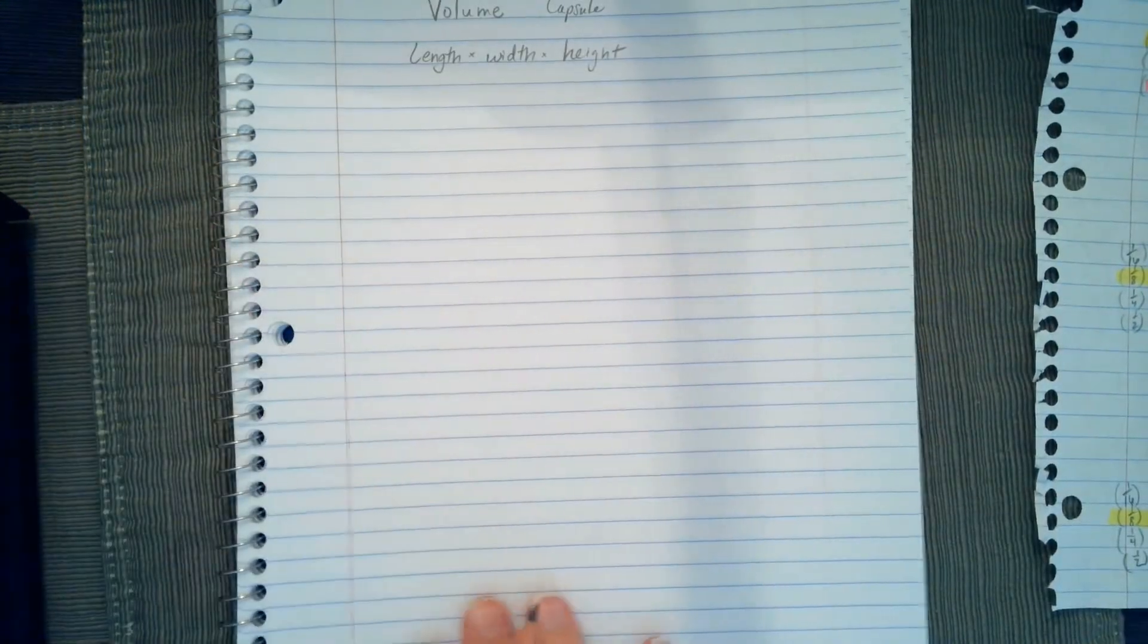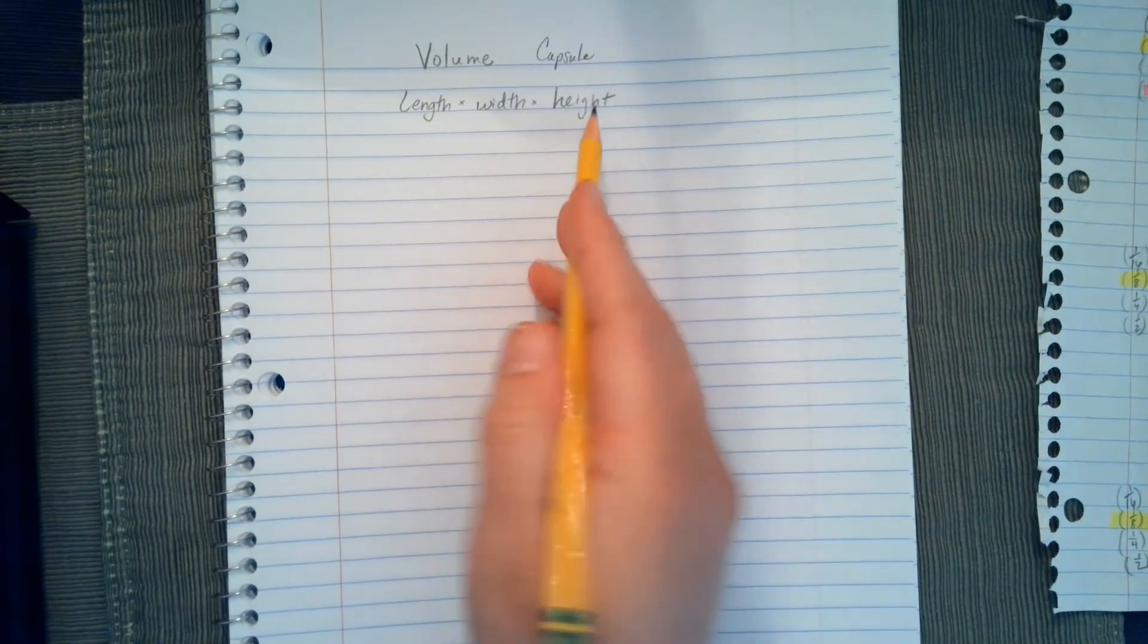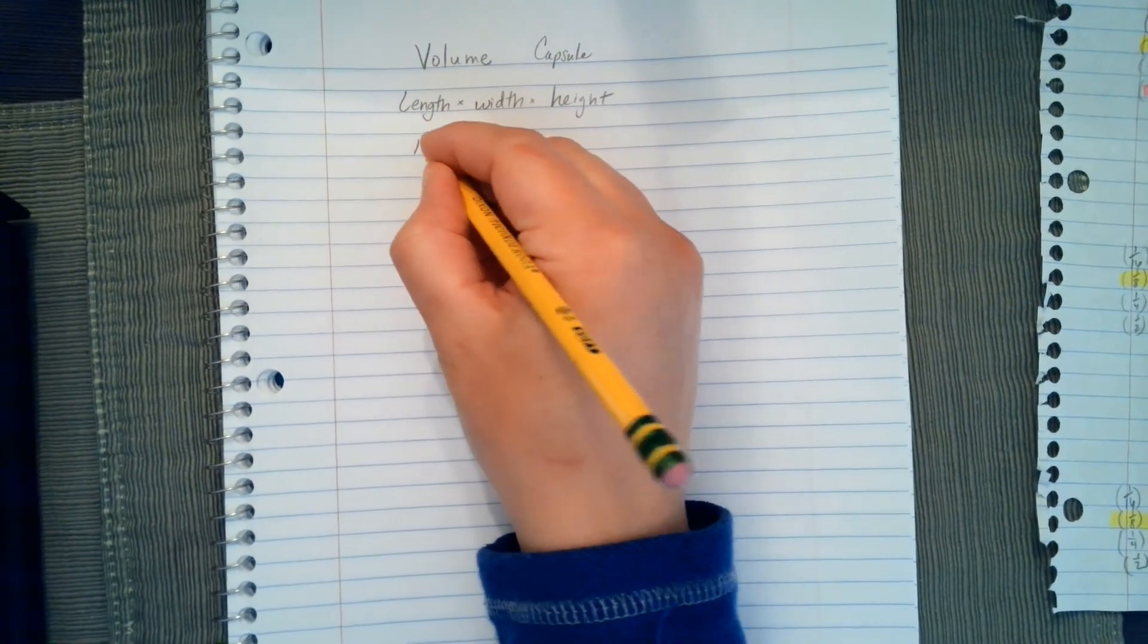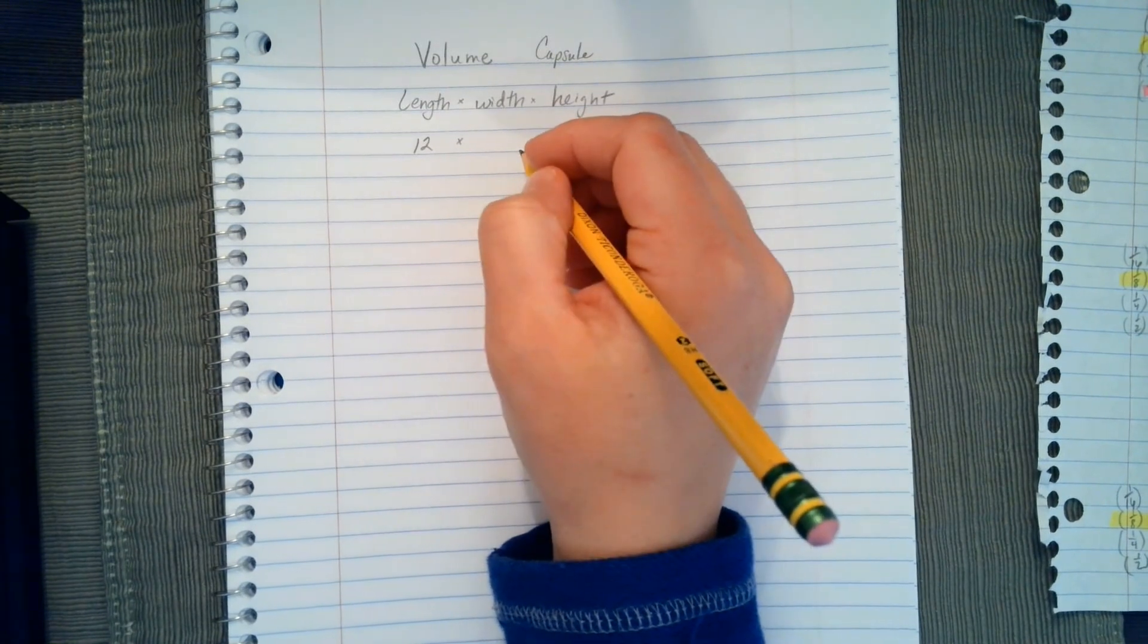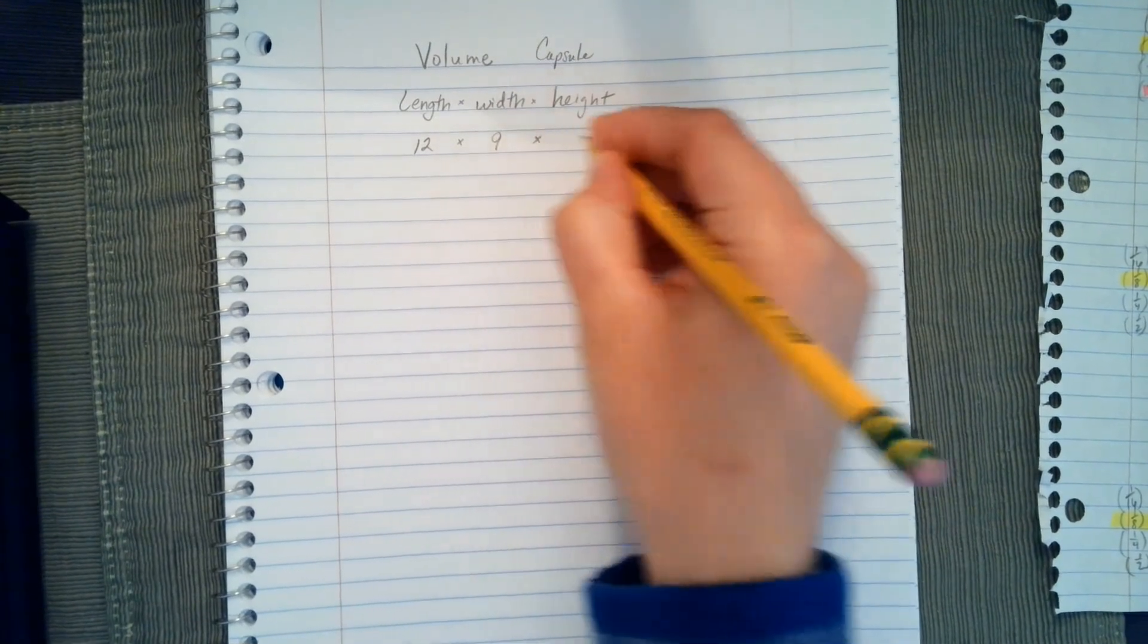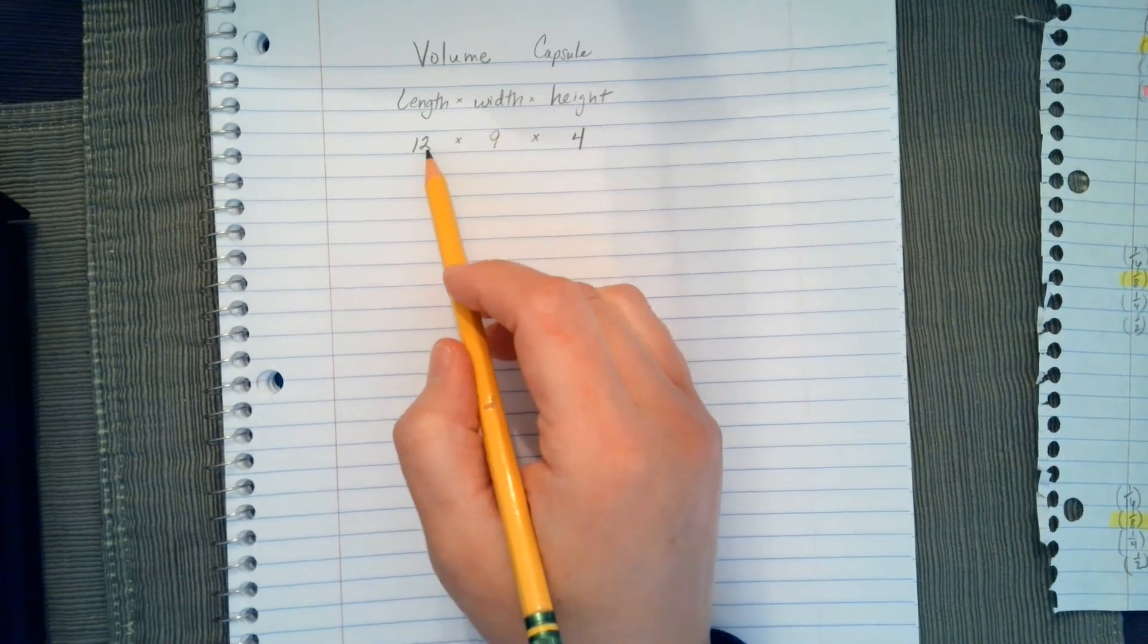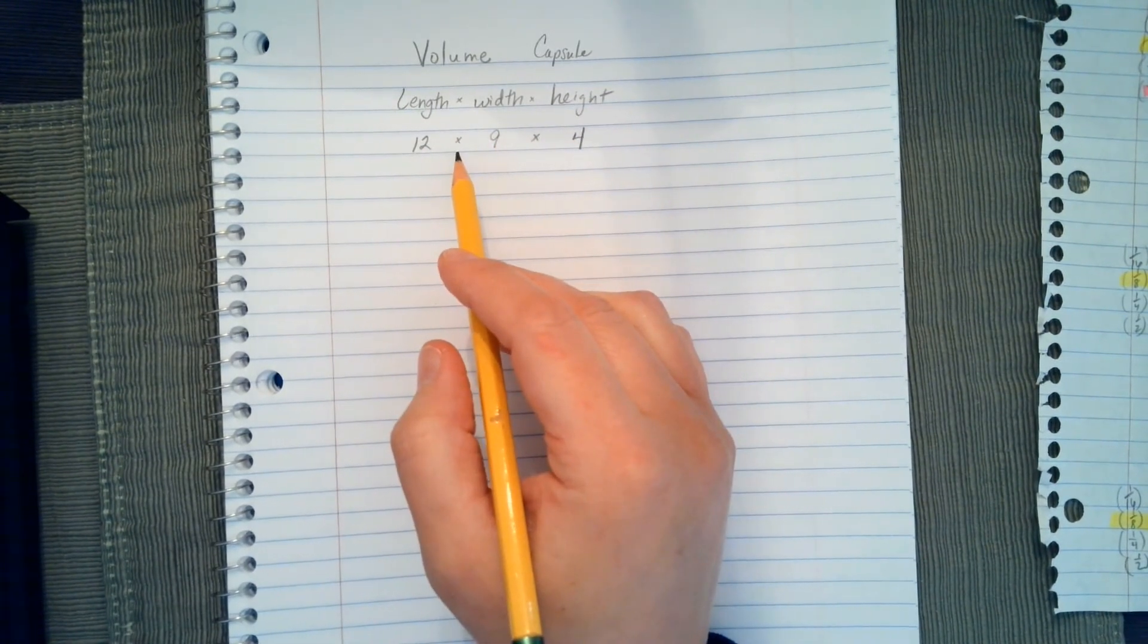Okay, so here's my volume. We're going to take our length, width, and height. The length of my capsule is 12 inches. The width of the capsule is going to be 9 inches. And the height of my capsule is 4 inches. Now remember, you could use your standard algorithm if you'd like, or you can use an area model. I will show both.